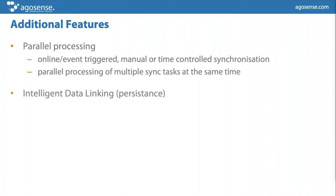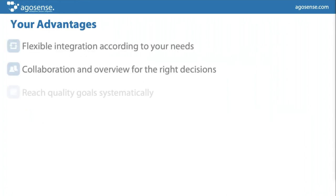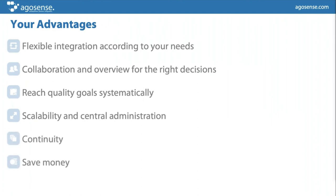With our persistence module, we intelligently link data between your system and the customer system — there's no need for you to store the unique IDs of items; we do that in our persistence. At the same time, we use that persistence to record the content of data exchanges, so for future synchronizations we can exactly detect if any data to be transported has changed. If not, we will not transport it — that saves a lot of network bandwidth and capacity, which is a very clever implementation.